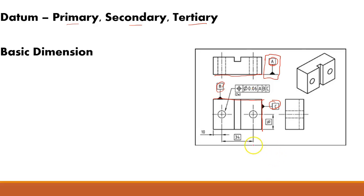Another thing to keep in mind is the basic dimension. Notice in this picture that you don't see a lot of tolerancing on these dimensions — the dimensions that depict the distance between these holes, or from the hole to this side. When you have a box around these dimensions, these are what's known as basic dimensions. That tells the inspector or the person measuring this that you're going to get all of your tolerancing from your control frame. These holes' locations are going to be controlled in another method — not through a direct tolerance.